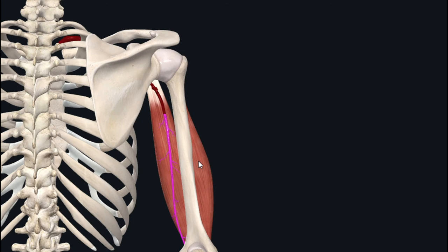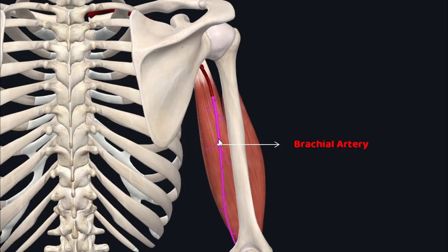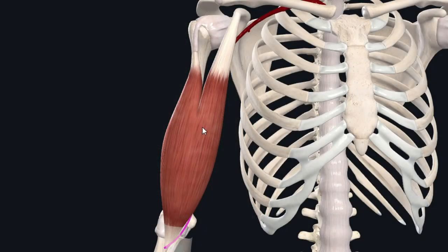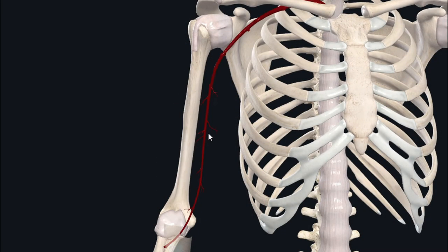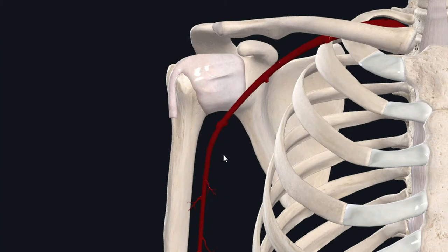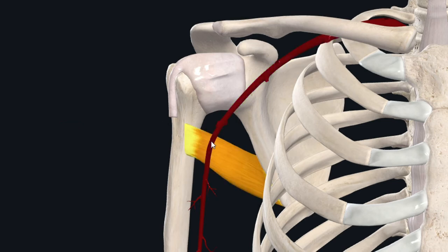The biceps brachii muscle receives its arterial supply from the brachial artery, which is a major blood vessel of the arm lying deep to the biceps brachii. The brachial artery begins as a continuation of the axillary artery — as the axillary artery crosses the lower margin of the teres major muscle, it continues as the brachial artery.